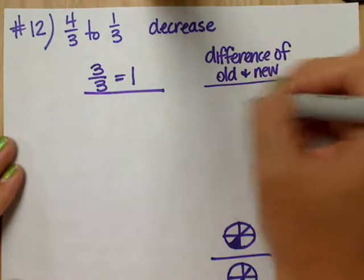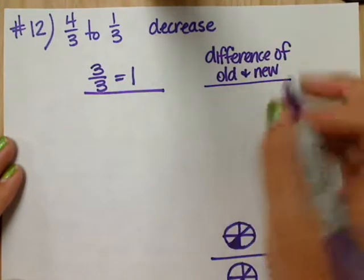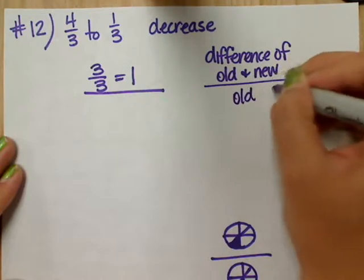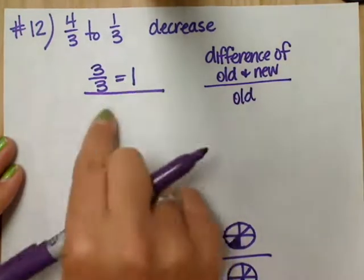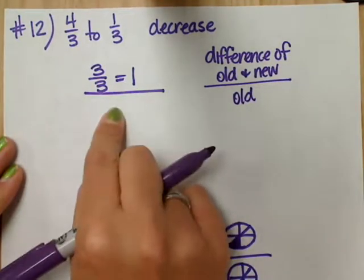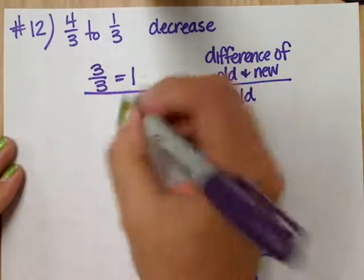And what's my bottom number? What's my bottom number stand for? Or what do I find it? Original or old. Alright, so I need my bottom number. What's my original or old number? Four-thirds.